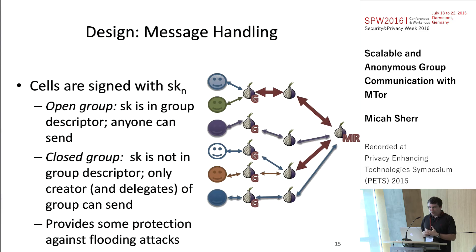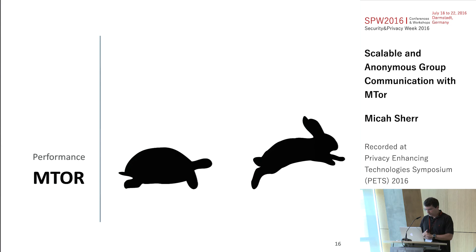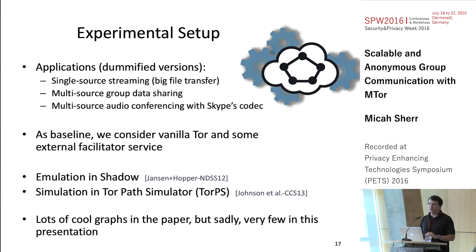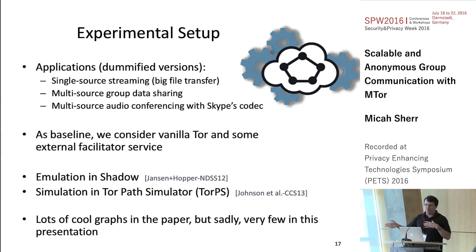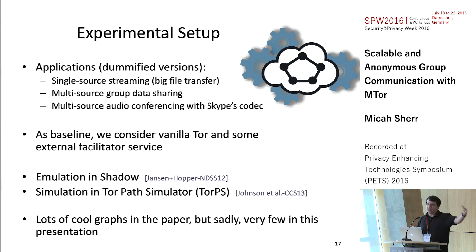For performance, we implemented dummified versions of applications with traffic profiles similar to real ones: a single-source streaming application, multi-source group data sharing in a BitTorrent swarm-type situation, and multiple-source audio conferencing using Skype's codec. Our baseline is the straw-man solution of using regular Tor with an external facilitator that echoes things to the right people.